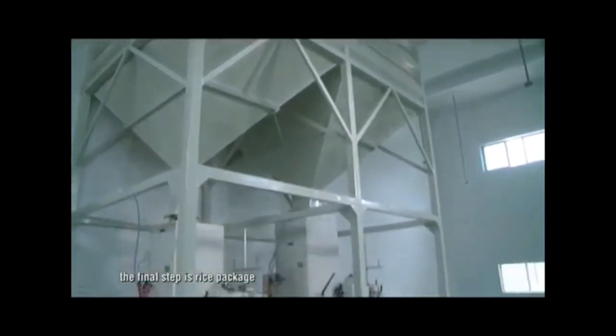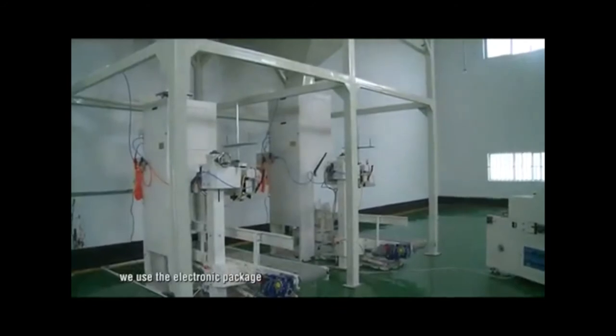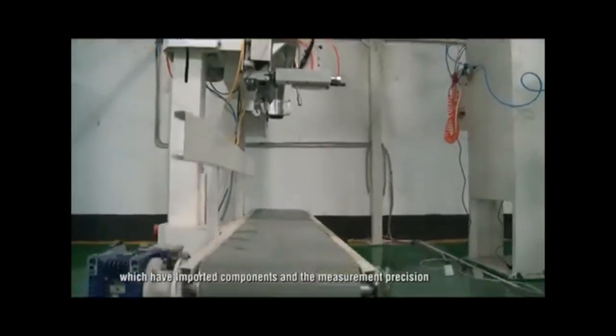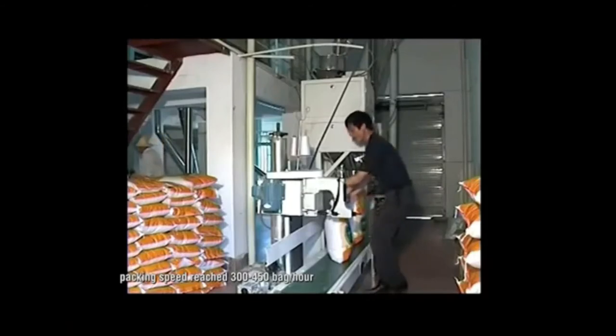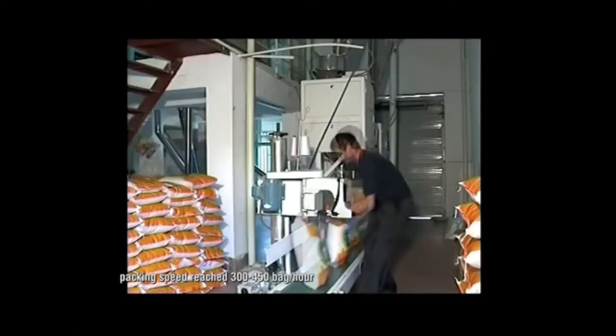The final step is rice package. We use the electronic packaging machine, which has advanced components and measurement precision. Packing speed reaches 300 to 450 bags per hour.